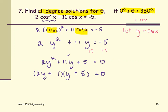Use the zero product property. The first one will give us 2y plus 1 equals 0 or y equals negative 1 divided by 2. The second equation from y plus 5 equals 0 or y equals negative 5.